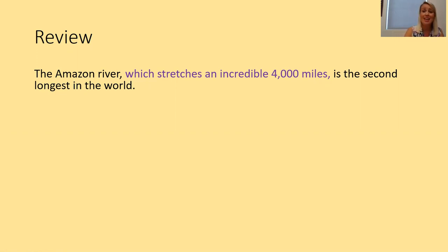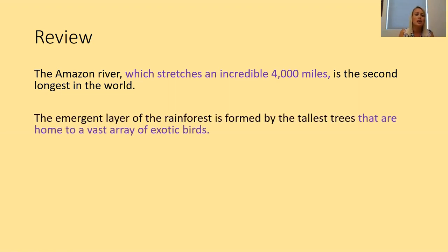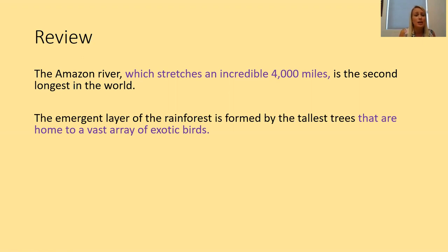You could have had a relative clause at the end of this main clause since you finish with the noun 'world', however your relative clause would have needed to describe 'the world' rather than the Amazon River. Another example — main clause: 'The emergent layer of the rainforest is formed by the tallest trees.' Here I've used the relative pronoun 'that' to start my relative clause and modify the trees. So now I have: 'The emergent layer of the rainforest is formed by the tallest trees that are home to a vast array of exotic birds.'